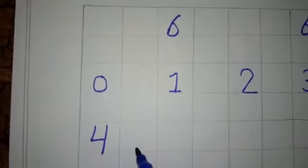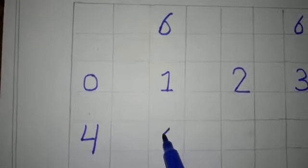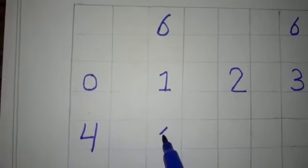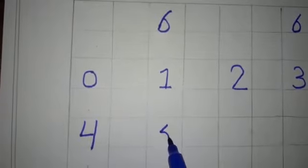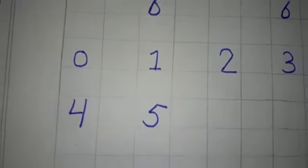Which number after I come to 4? Number 5. Make a slanting line, make a half circle and standing line. This is number 5.